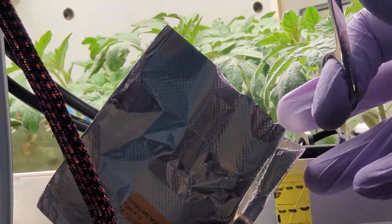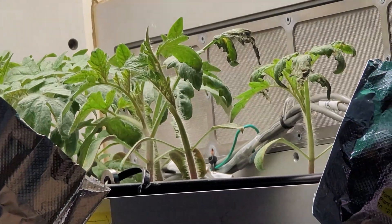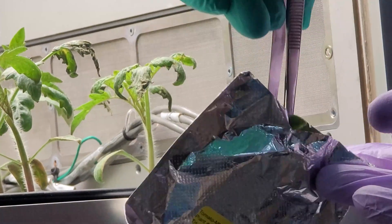The whole unit's self-contained, so we add a growth media inside of it and seal it up with seeds and everything ready for flight and put on a spacecraft like the Crew Dragon or Dream Chaser to be able to go to the station and deliver it to the astronaut.